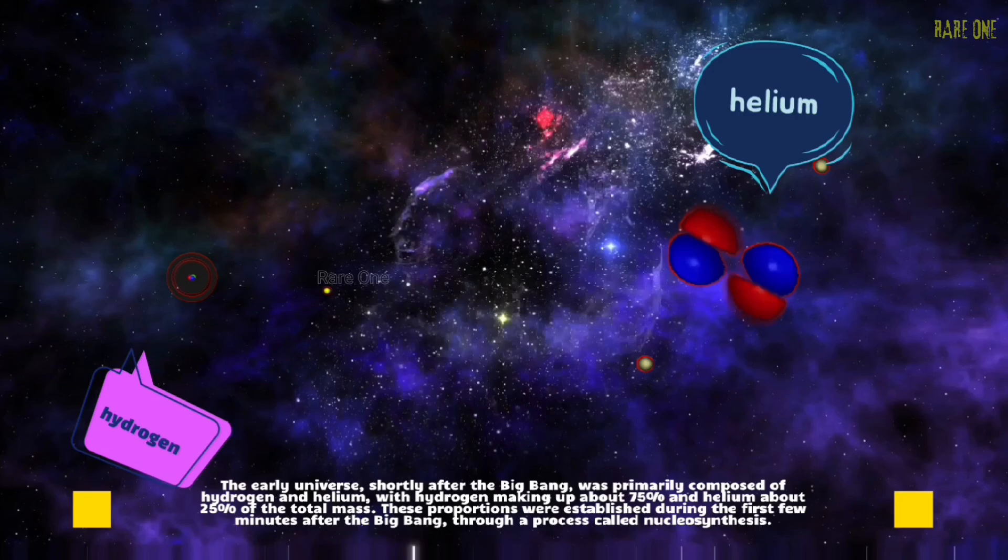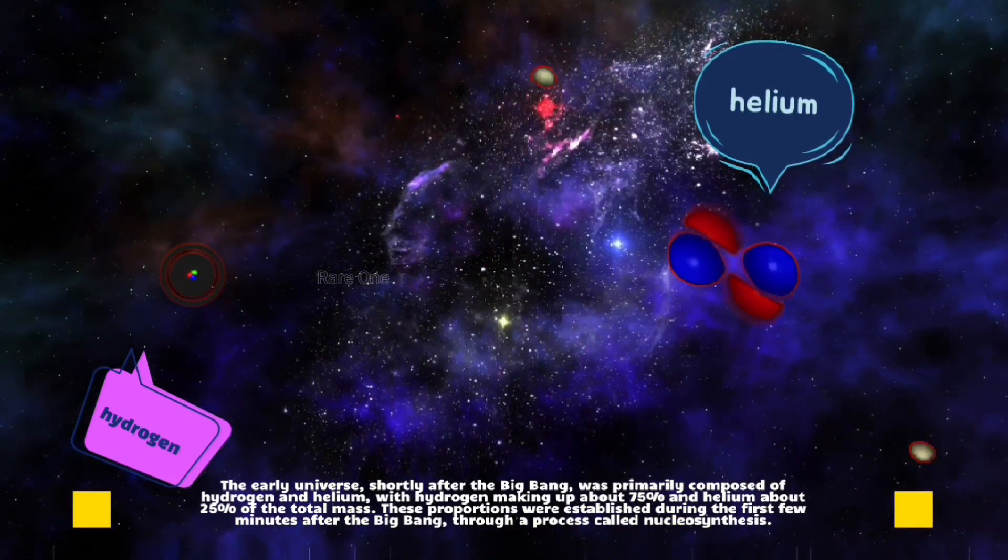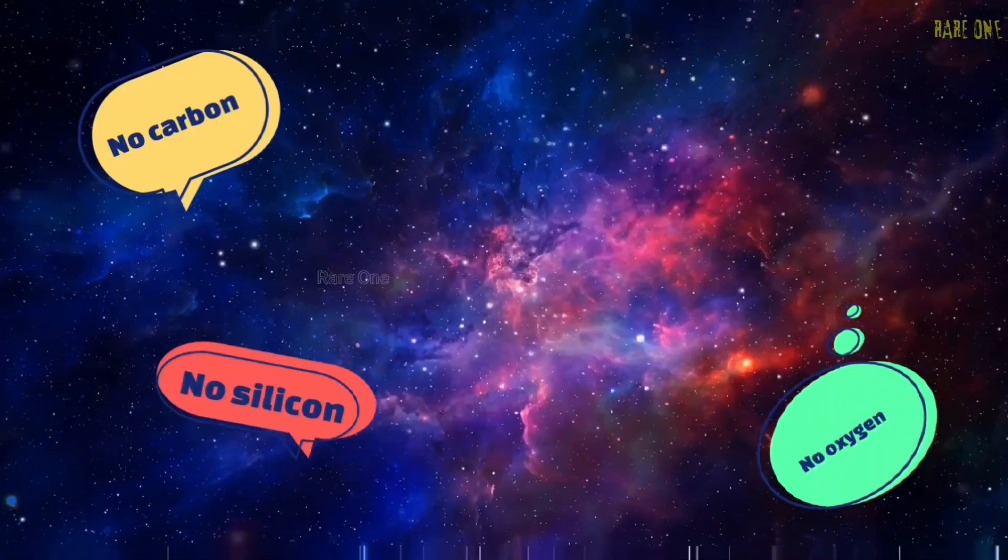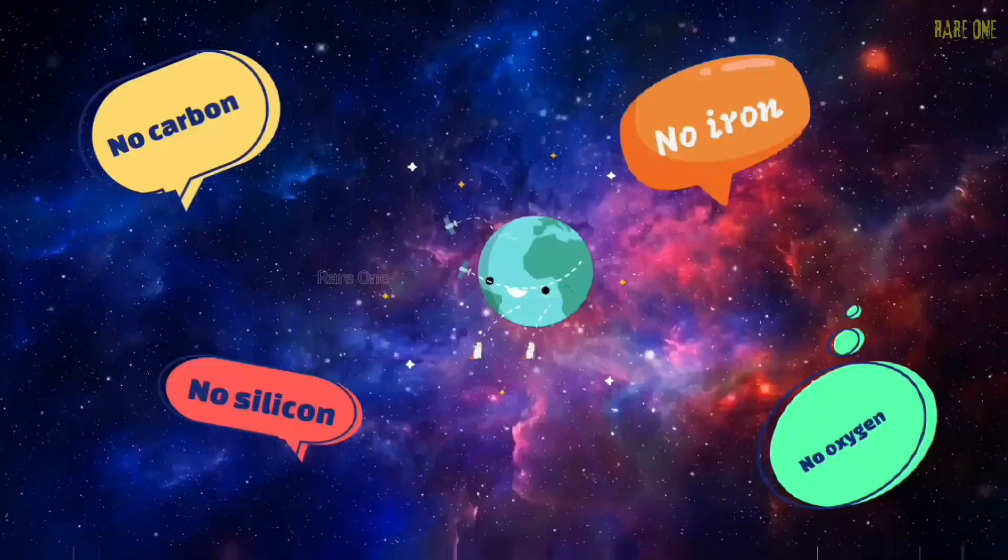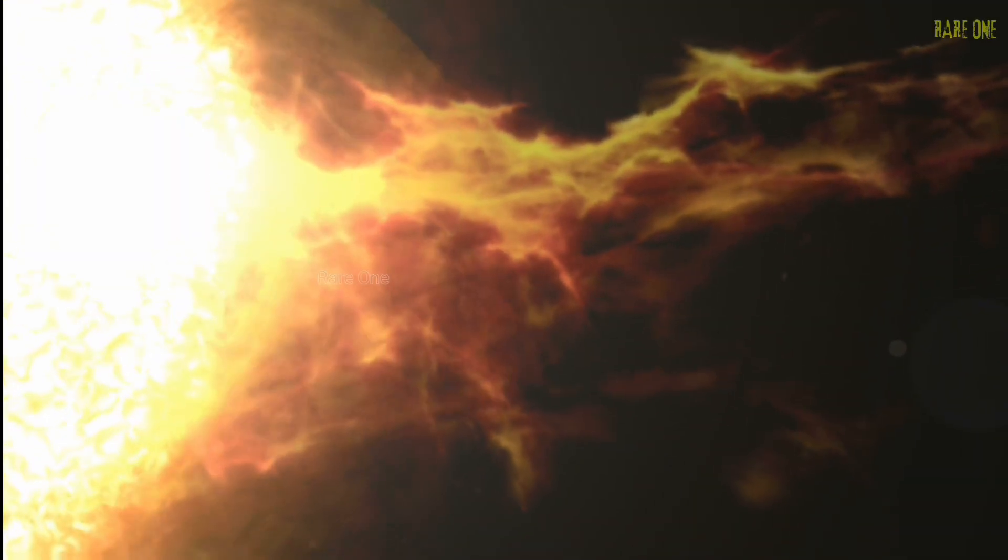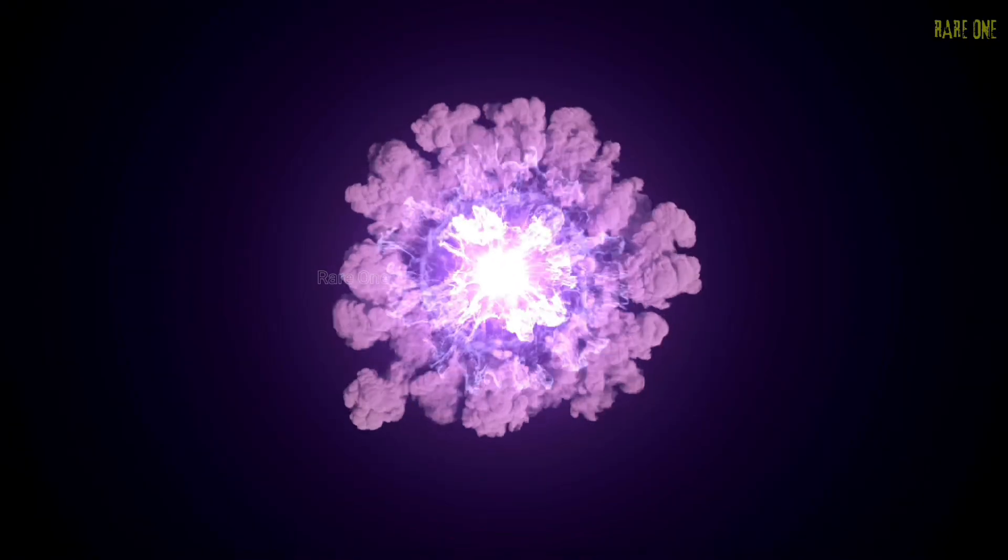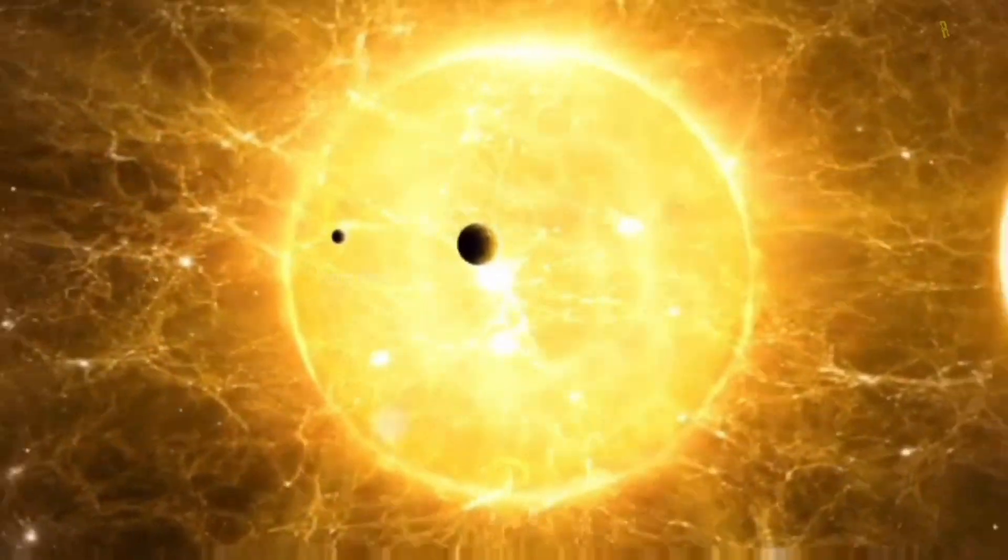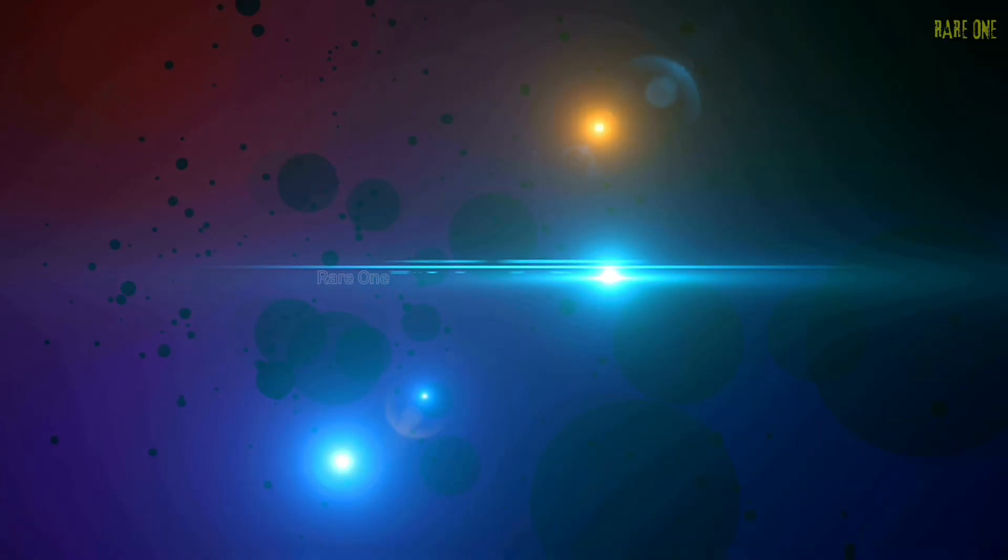When the universe began, it was almost entirely hydrogen and helium, about 75% to 25% respectively. Everything else? Less than a millionth of a percent. That's it. No carbon, no oxygen, no silicon, no iron. Nothing that could make rocky planets, or us. It took generations of massive stars living fast, burning bright, and dying spectacularly in supernovae to scatter heavier elements throughout the galaxy. These stellar explosions were like cosmic factories, forging the elements we needed and spreading them through space. By the time our solar system formed, we had reached a critical threshold: about 2% heavy elements. That might not sound like much, but it was enough. Enough to make rocky planets. Enough to make life possible.